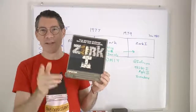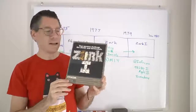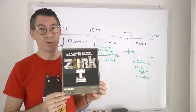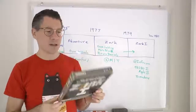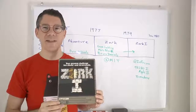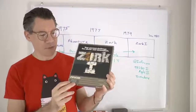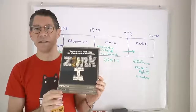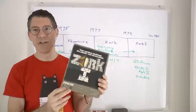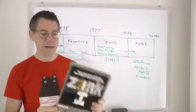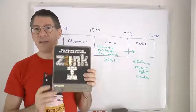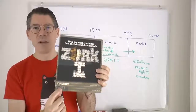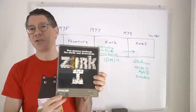If you don't know what Zork is, get thee to the Wikipedia. It was the first commercially successful — actually the very first commercial — text adventure game, what we now know today as interactive fiction. This version is the Apple II version. This box is actually from 1984, but it basically first came out around 1980. The interesting thing about Zork 1 is that even though it says it's for the Apple II, which ran on a 6502 processor,